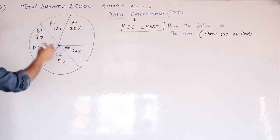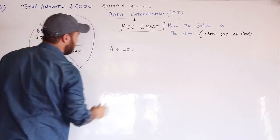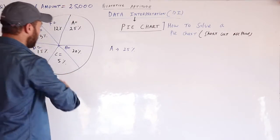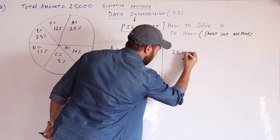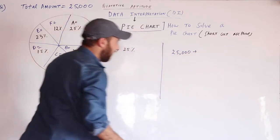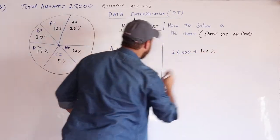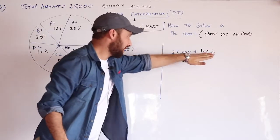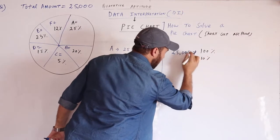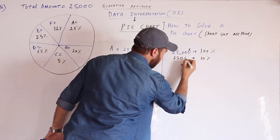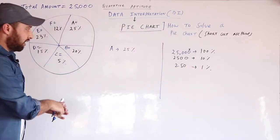Let us start how to solve the pie chart. Suppose Person A is spending 25% of 25,000. This 25,000 is equal to 100%. If I take 10% of this amount, I can cancel one zero — that means 10% equals 2,500. If I take 1% of this amount, that is 250.